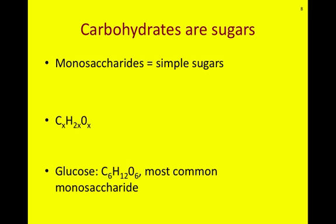Carbohydrates are simply sugars — what you think of when you think about sugar: sugar in your honey bun, sugar that is present in your rice. The most simple sugars are monosaccharides, which means simple sugars. The chemical formula for any monosaccharide must fit this definition: CX, H2X, and OX. This means a monosaccharide must have the same number of atoms of carbon and oxygen, and twice as many hydrogen atoms as carbon and oxygen.